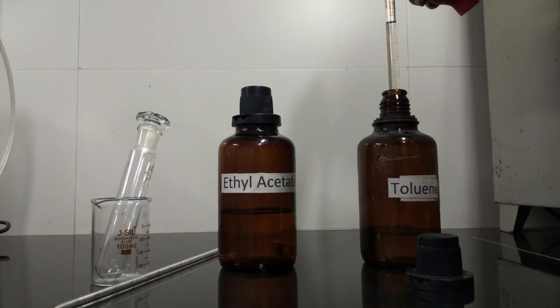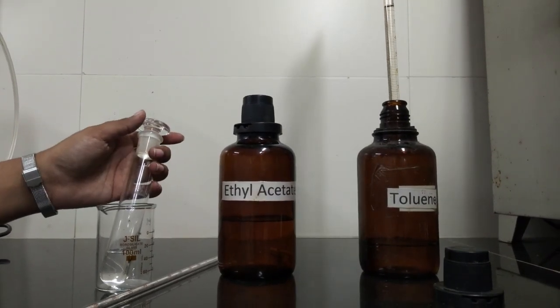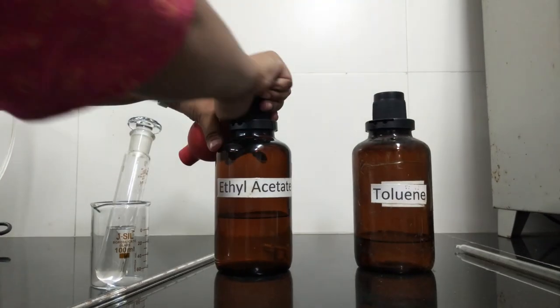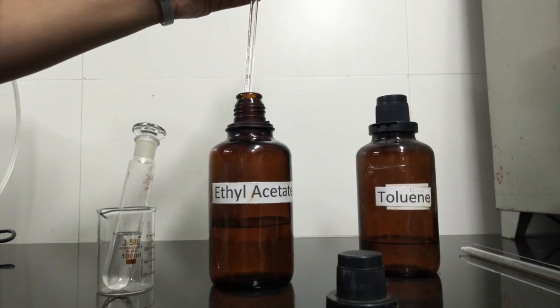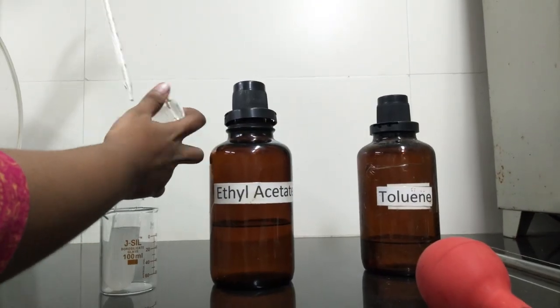Mobile phases used are organic solvents, toluene and ethyl acetate, in the ratio 18 is to 2 volume by volume. But why only these solvents? As terpenoids are volatile in nature, these two organic solvents are used.